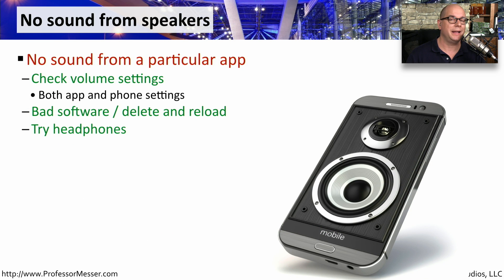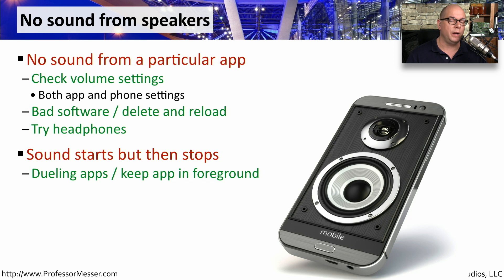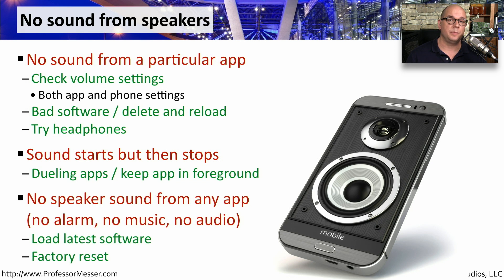If you're using an application on your mobile device and not getting any sound, first check the volume settings — there are often both application volume settings and phone volume settings. If the problem is with the software, stop the application and restart it, or uninstall and reinstall to see if that fixes it. The issue may also be with the device's speakers, so try plugging in headphones to see if you get audio through them instead. A common problem is that one application begins playing sound and then stops because another application takes control of the speakers. Keep your primary application in the foreground to prevent this. If no sound comes from any application, try reloading the operating system or performing a factory reset to see if the problem is software-related.